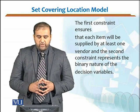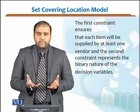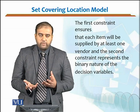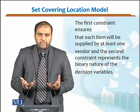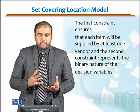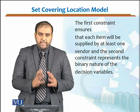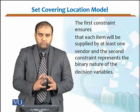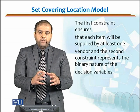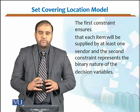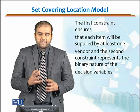The second constraint represents the binary nature of the assignment. yj belongs to {0, 1} — either 0 or 1 — so it is an assignment-type problem. Either that vendor is selected or not. But at least one vendor should be selected, or more than one can be selected for the purchase of an item. The second constraint is all about the binary nature of that assignment.